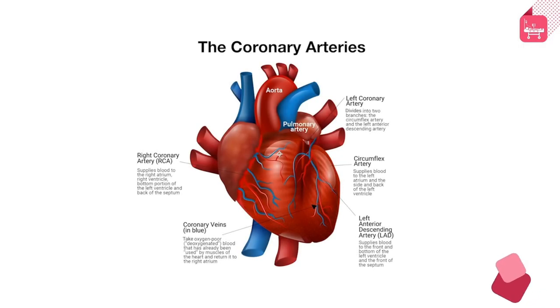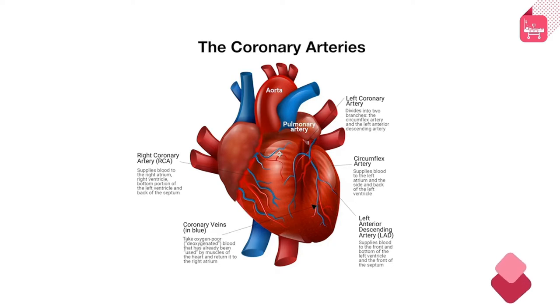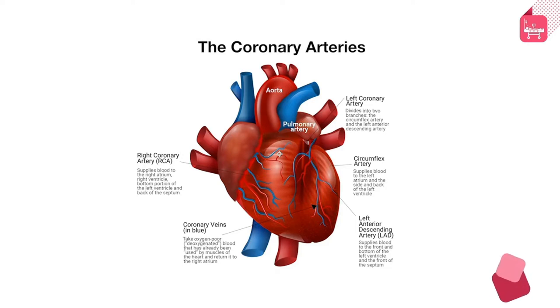To have a good understanding of ECG interpretation, one needs the anatomy of the coronary arteries in mind. There are two major coronary arteries: left and right. The left coronary artery divides into the LAD, which supplies the septum and anterior wall of the left ventricle, and the left circumflex artery, which supplies the lateral and posterior walls. The right coronary artery mainly supplies the inferior wall.